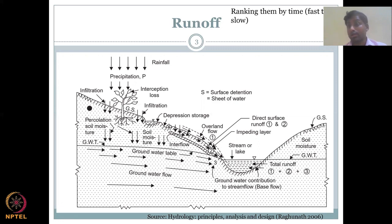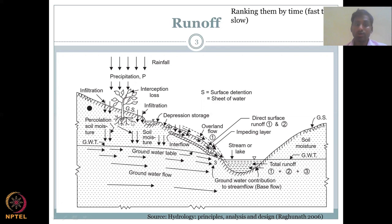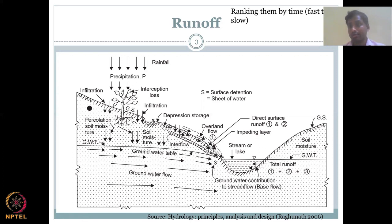What is needed for surface runoff? A slope and gradient. Only when there is a slope will the water run off, flowing on top of the surface and collecting into a stream, river, lake, or whatever water body is present.